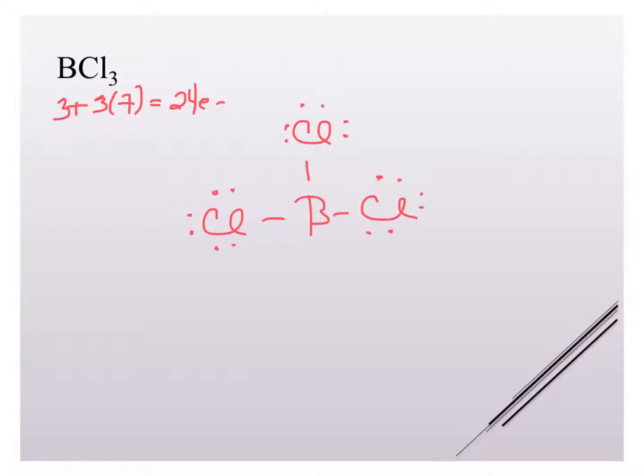And so what we see here is we've got our three groups around our central atom. So we have AX3 as our general form, and we have trigonal planar for our electron geometry. And for our molecular geometry, we also have trigonal planar because we have no non-bonding groups.